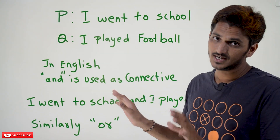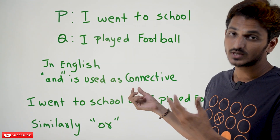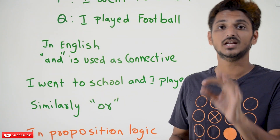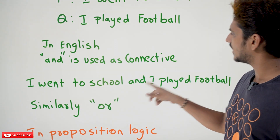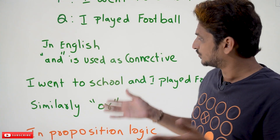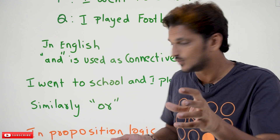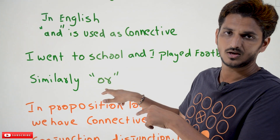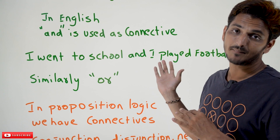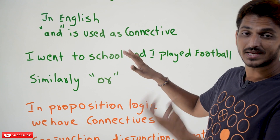Now coming to simple English. In simple English, 'and' is used as a connective. We can use 'and' to connect these two statements, and this connective has a particular meaning. 'I went to school and I played football.' We use the connective 'and' when both statements happened. Similarly, we have another connective called 'or.' We use 'or' when either any one of the statements happened.